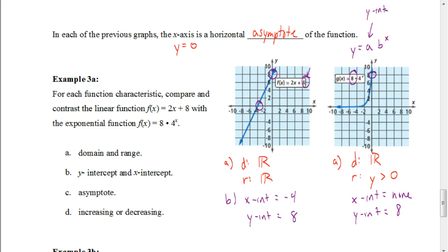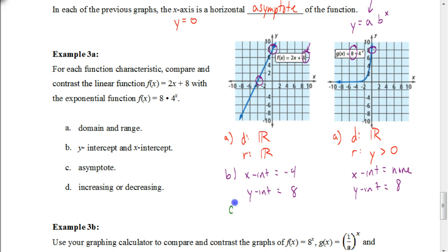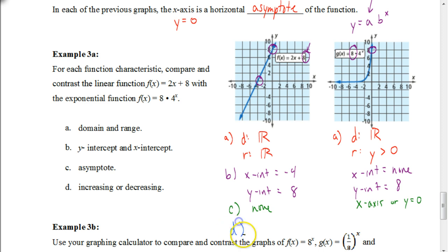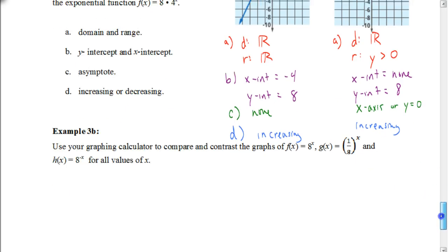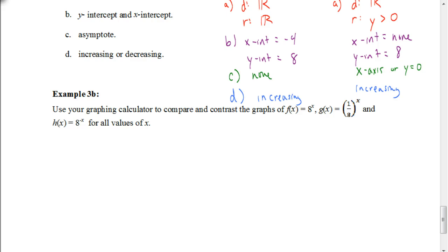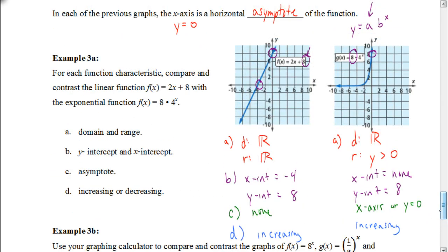The next thing they ask us to find is asymptotes. There is none in the first linear equation. But for the exponential function, the asymptote would be the X axis, or the line Y equals 0. Lastly, they ask if it's increasing or decreasing — both graphs, as you can see, are increasing from left to right. So there you have it. Hopefully now you can do your assignment without any problems. Good luck.